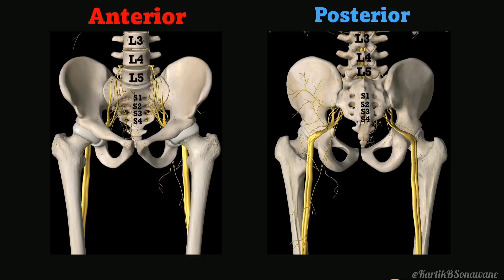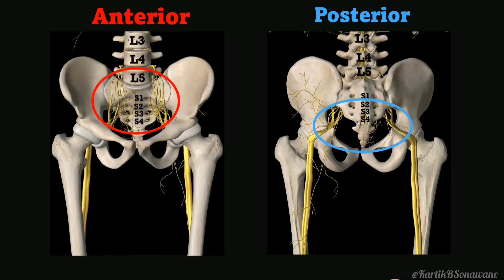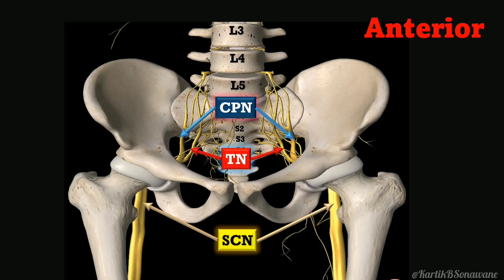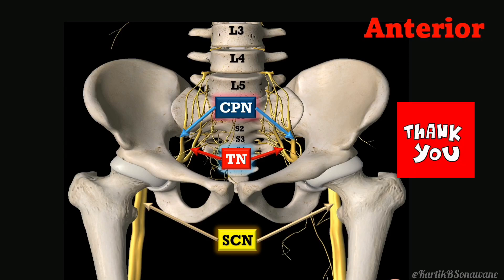The sacral plexus forms within the pelvic cavity and exits posteriorly through the greater sciatic foramen, where most of its branches supply the gluteal region. After innervating pelvic and gluteal muscles, the major branch — the sciatic nerve — travels from the pelvic cavity to the posterior thigh. Notably, both components, the tibial nerve and common peroneal nerve, appear distinct and separate right from their origin within the plexus.